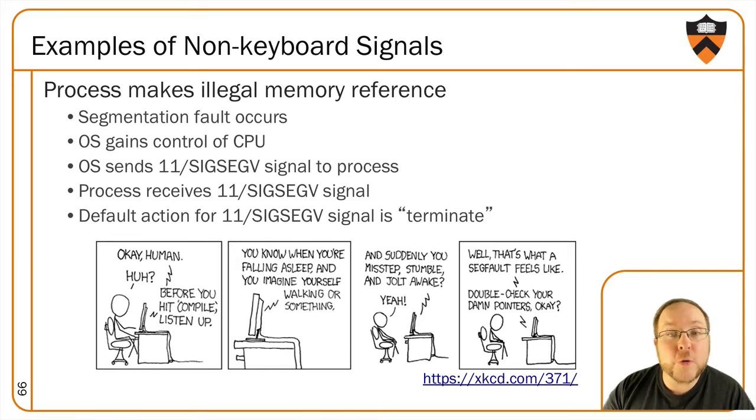Another example of a signal is our old frenemy, SIGSEGV, the segmentation fault, which gets raised when we execute an instruction that makes an illegal memory access. Again, OS gets control of the CPU due to the interrupt. It sends the signal, signal 11 in this case, to the process, and the process receives the signal and handles it. The default reaction for signal 11, as we're all well too aware by now, is to terminate the process.